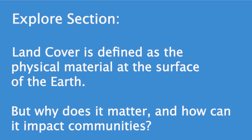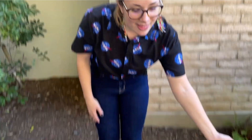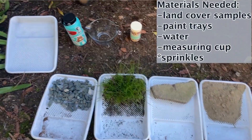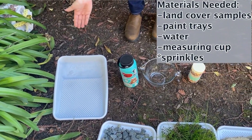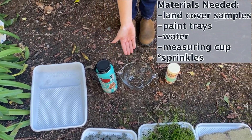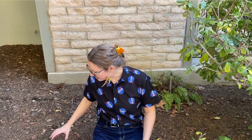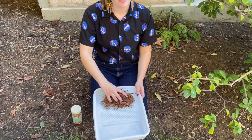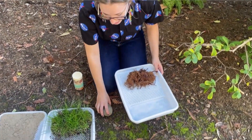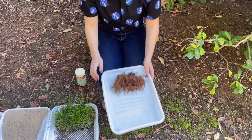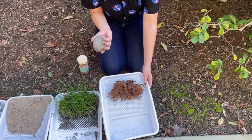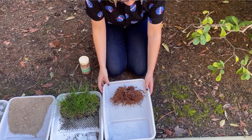To learn more, let's try a simple experiment. All you need are different samples of different land types, paint bins to hold them, some water, a measuring cup, and sprinkles are optional. You'll want to place your surface sample in the shallower end of the tray, and then put a rock or a piece of wood under the shallower end to keep it stable.